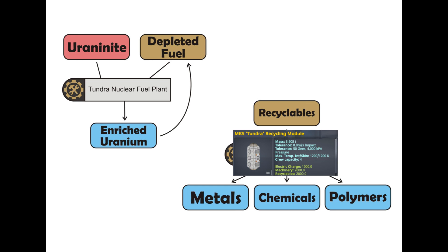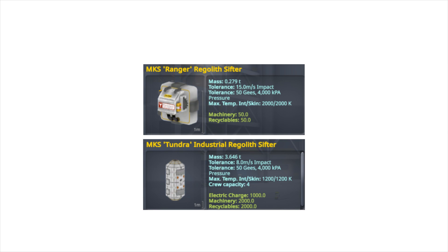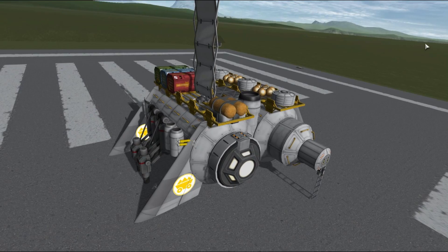The last important facility that hasn't been mentioned so far are sifters. Sifters take in vast amounts of dirt and produce all of the other mineable resources. Therefore, if you just need a little bit of something that is not available in your current location, you can just put in dirt and eventually some quantity of that resource will come out.